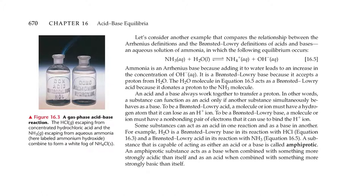A substance can function as an acid only if another substance simultaneously behaves as a base. To be a Bronsted-Lowry acid, a molecule or ion must have a hydrogen atom that it can lose as a proton. To be a Bronsted-Lowry base, a molecule or ion must have a non-bonding pair of electrons that it can use to bind the hydrogen ion. Some substances can act as an acid in one reaction and a base in another. For example, water is a Bronsted-Lowry base in its reaction with hydrochloric acid and a Bronsted-Lowry acid in its reaction with ammonia. A substance capable of acting as either an acid or a base is called amphiprotic. An amphiprotic substance acts as a base when combined with something more strongly acidic than itself, and as an acid when combined with something more strongly basic than itself.